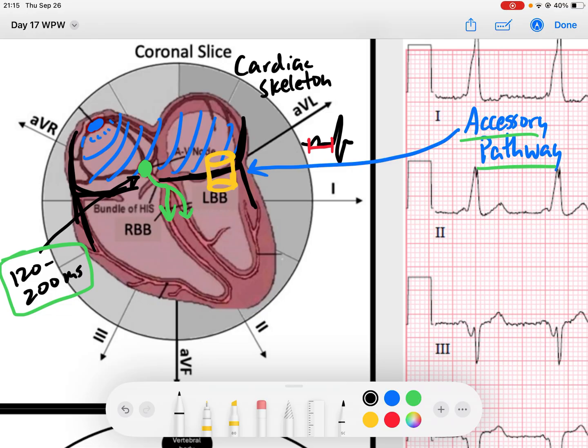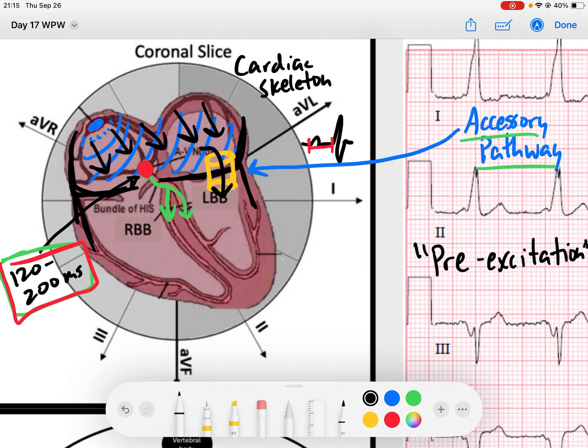So what actually happens is when signal arises from the SA node and depolarizes through the atria, that signal gets captured by the AV node and delayed. And that delay takes 120 to 200 milliseconds. But in the meantime, some of those signals can actually slip through this accessory pathway in what we would call pre-excite or cause pre-excitation of the ventricles. And so you can actually get early depolarization of the ventricles. And while that's happening, you get that rest of that signal a little bit later coming from the AV node.